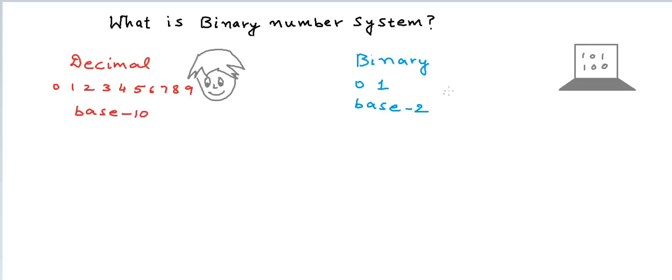Now, why does a computer understand binary? The simplest explanation is that a computer is an electrical device and all an electrical device understands is electrical signals. For example, if we have an input wire to this machine, there are only 2 states possible for this wire. Either current is flowing through this wire or current is not flowing through this wire.